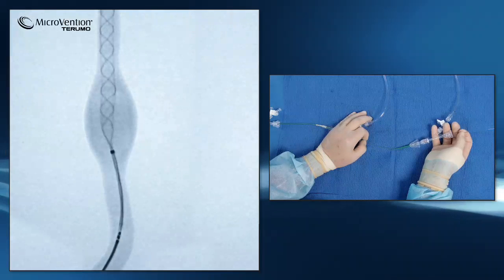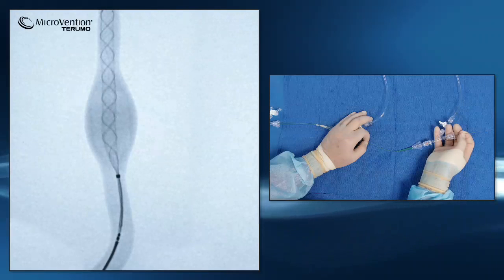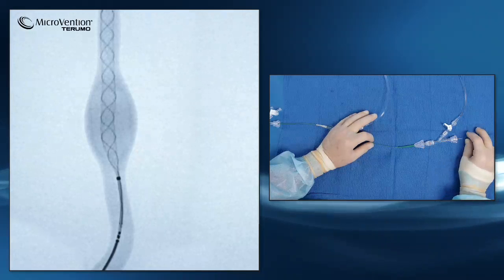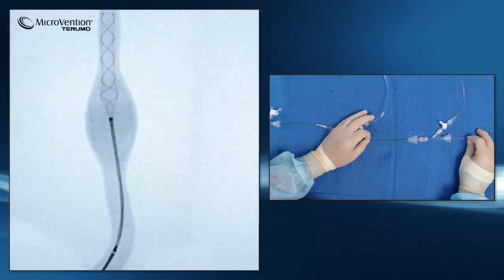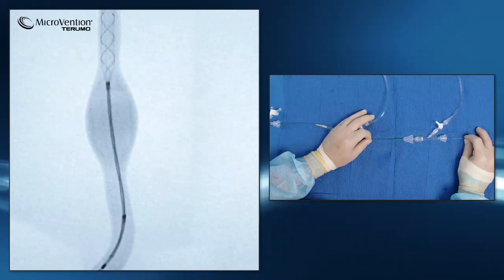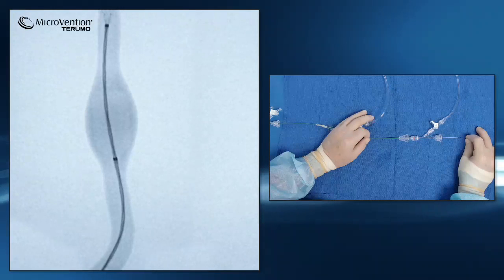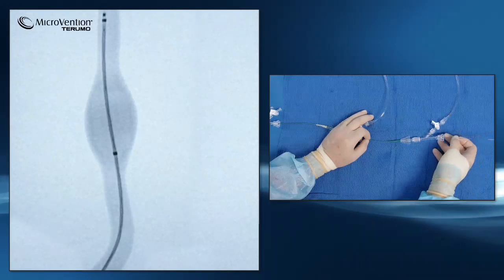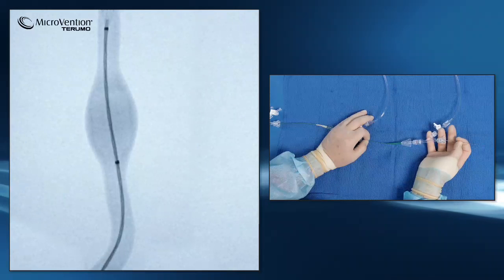At 50% of the deployment, check to see where your proximal ends are of the FRED device using the 50-50 rule. Here we can see that we do not have enough length, therefore we must resheathe the device and reposition. Maintain a forward motion on the microcatheter with pull on the delivery system to resheathe. Reposition the device again to the desired location to ensure there is enough stent length.